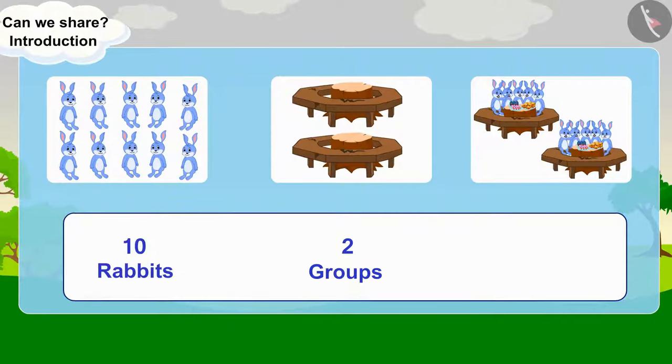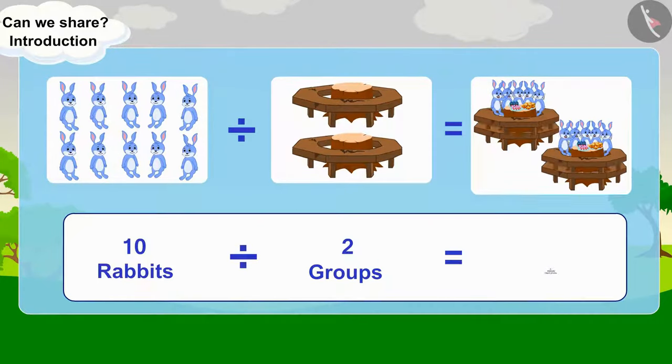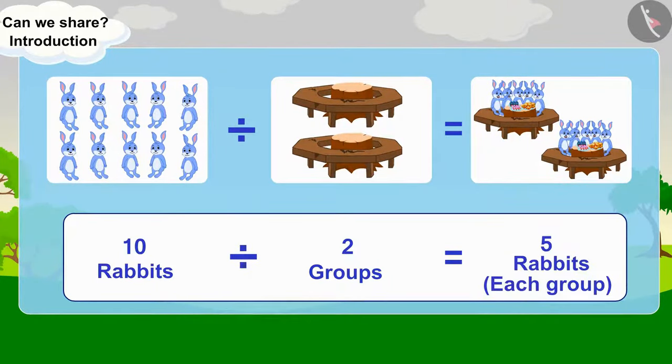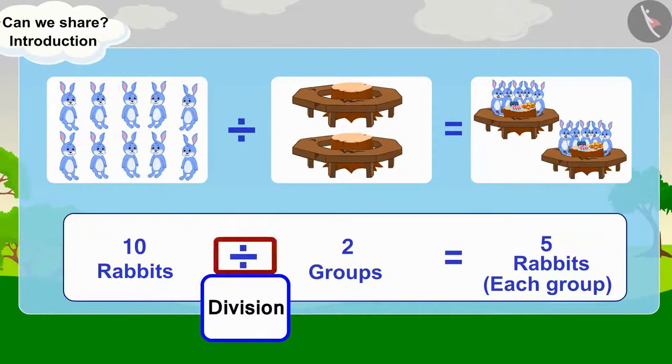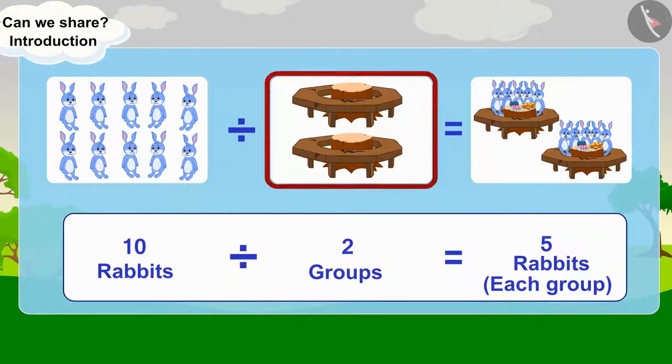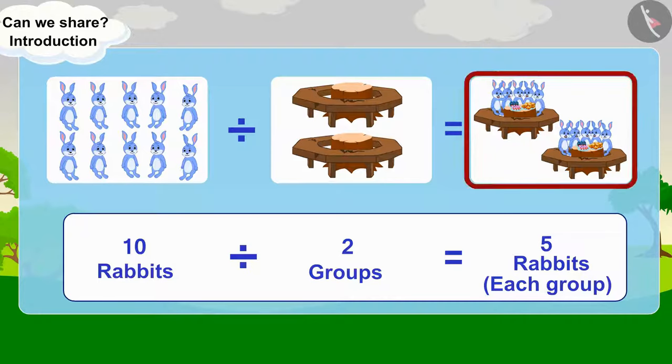So, we can call it dividing ten rabbits in two equal groups, there are five rabbits in each group. This is the total number of things to be divided. This is a symbol of division. This is the total number of groups. This is the total number of things in each group.